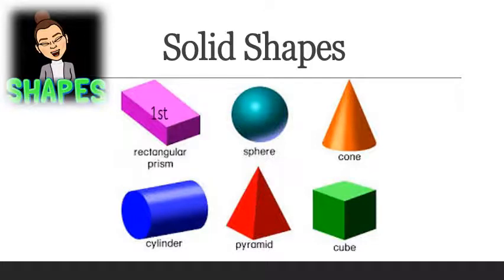Our first shape is called the—great job—rectangular prism. And that particular shape reminds us of a flat shape. Can you guess? If you guessed a rectangle, you are correct.